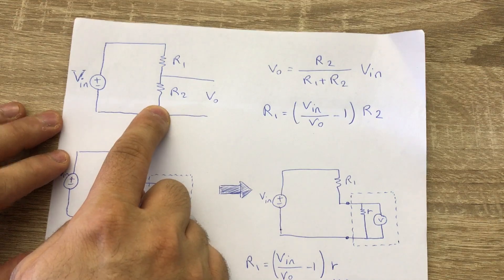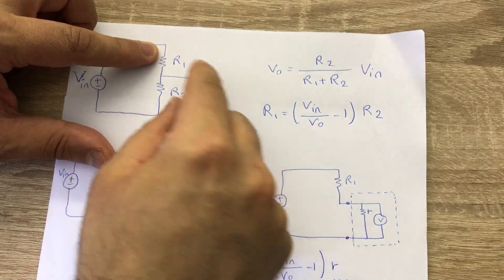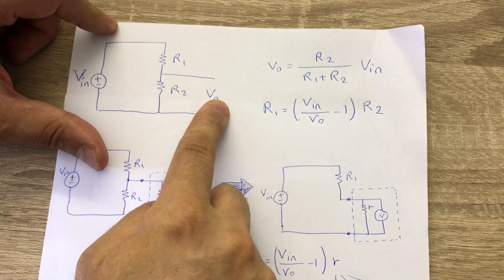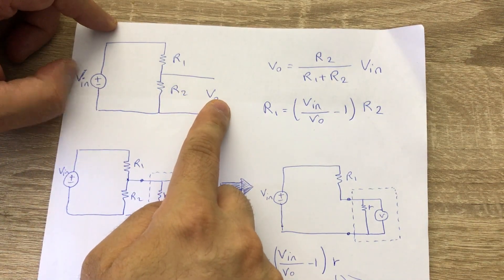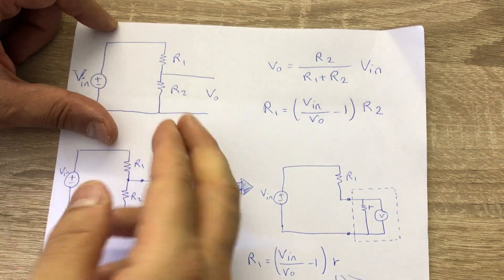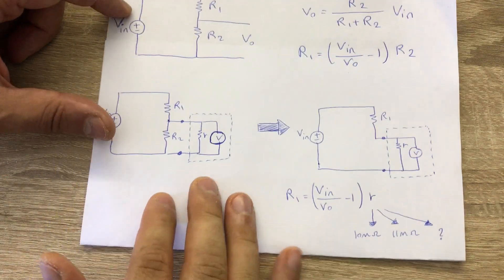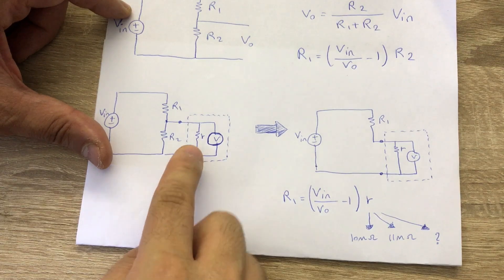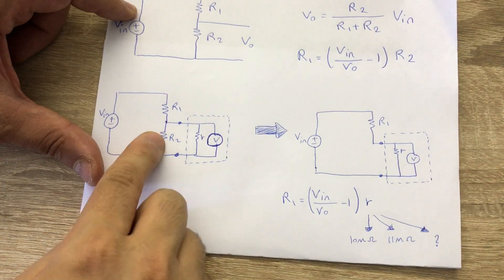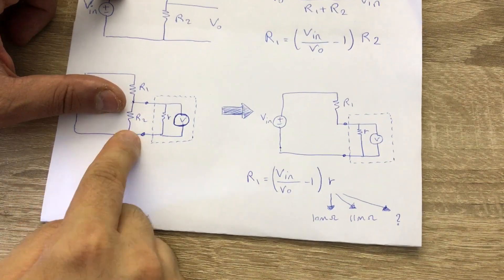If R1 is very large — say 10 gigaohm — and you put R2 very small, say tens of kilohm, then the output voltage will be very tiny and your limited input voltage makes it impossible to measure proper values. On the other hand, if you put R2 very large, say 100 megaohm, there's another problem: your multimeter itself has an internal resistance that will be in parallel with R2, corrupting the measurement.